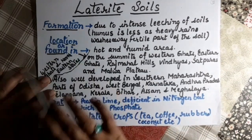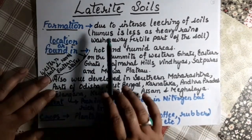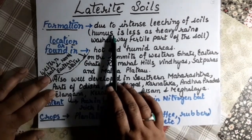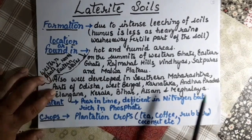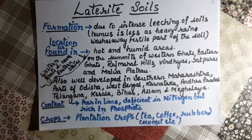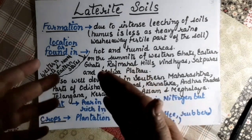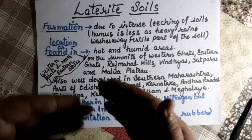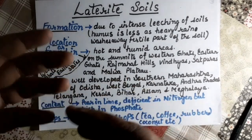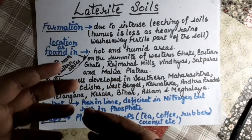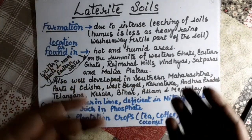Formation of the next soil type — laterite soil — is due to intense leaching. Leaching is the process where heavy rain washes away the fertile part of the soil, which is why humus is less in this soil.